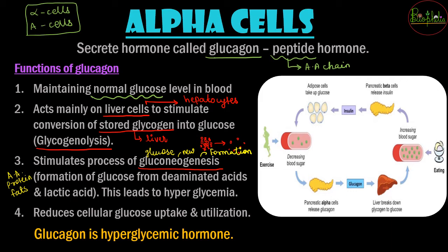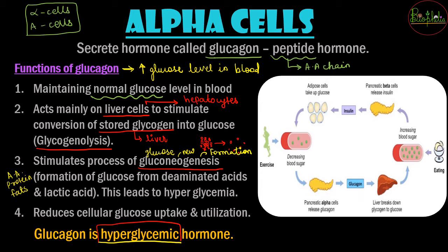So overall, for the maintenance of normal glucose level in the blood, glucagon increases the glucose level in the blood. Because it increases blood glucose levels, it is called a hyperglycemic hormone. Hyper means increased, and glycemic is related to glucose, so the hormone that increases glucose is called a hyperglycemic hormone.